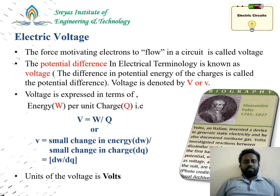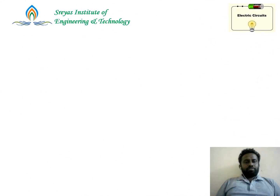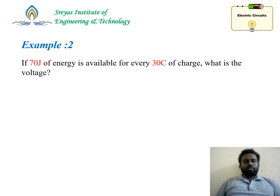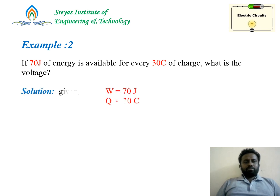V equals dW by dQ, and the unit of voltage is volts. Let's take example 2 based on voltage: if 70 joules of energy is available for every 30 coulombs of charge, what is the voltage? Work done is 70 joules, charge is 30 coulombs. So V = W/Q = 2.33 volts.